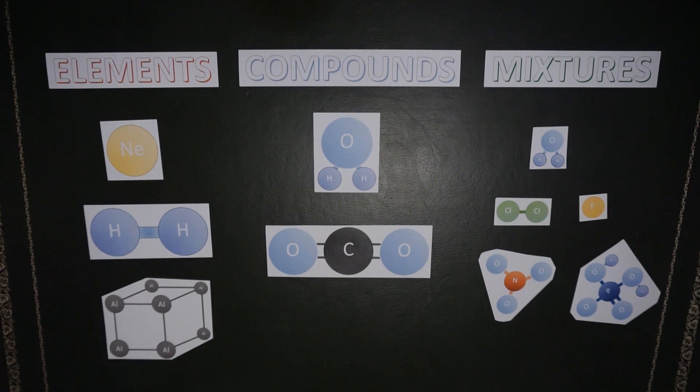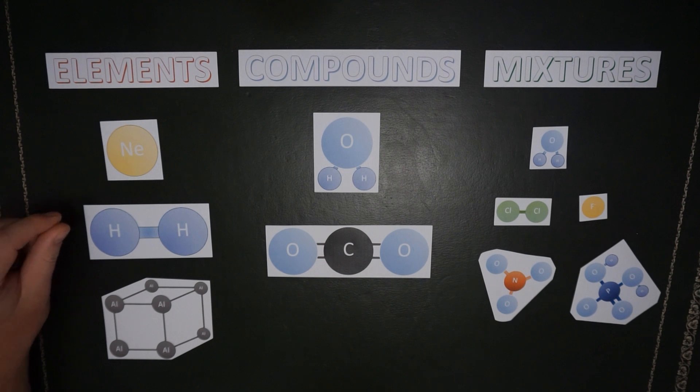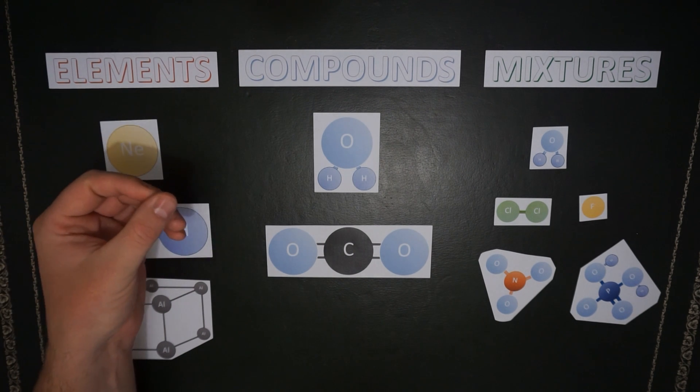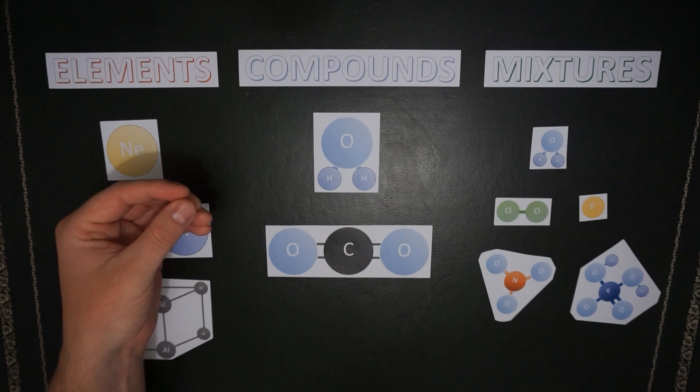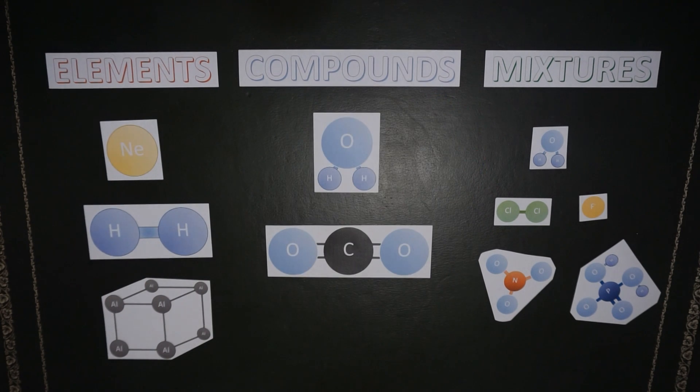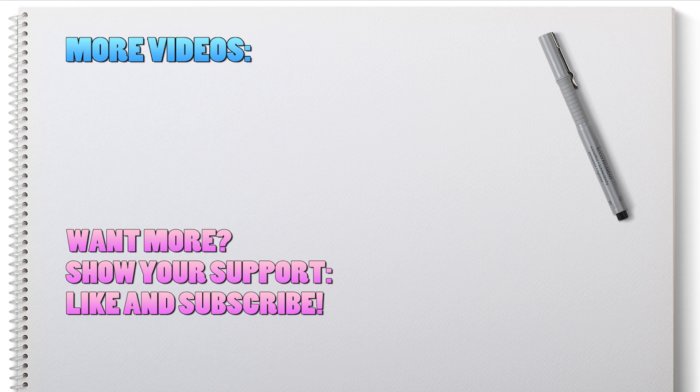And that's the end of today's lesson. We've covered elements, which are different types of atoms. We've covered compounds, which are made of two or more different elements bonded together. And mixtures contain a variety of compounds and elements. Thanks for watching and I'll see you next time.